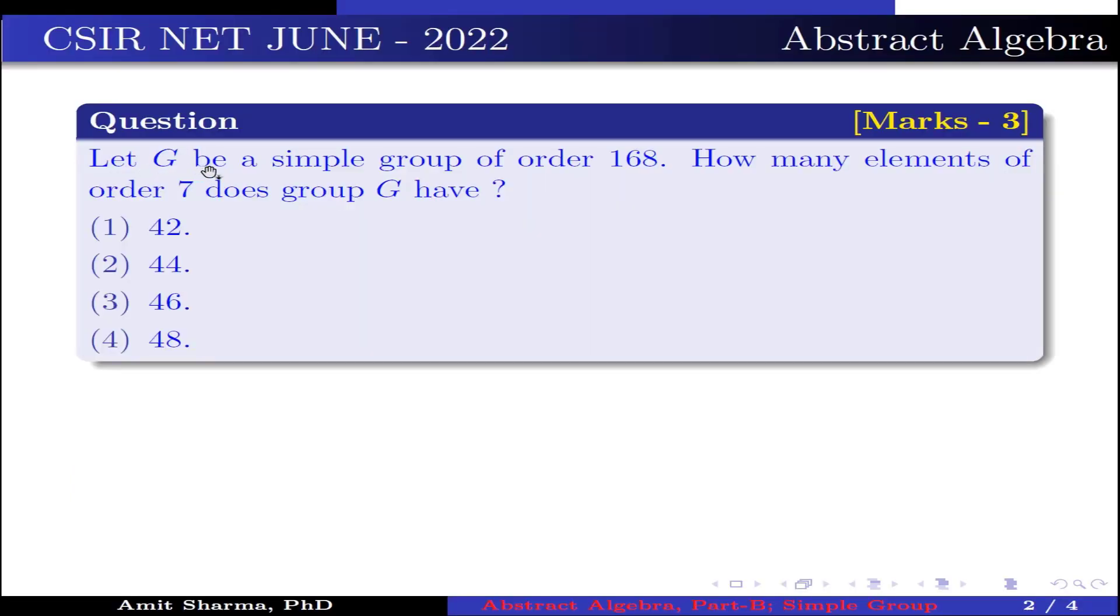Question is: Let G be a simple group of order 168. How many elements of order 7 does group G have? Option 1: 42, option 2: 44, option 3: 46, option 4: 48.